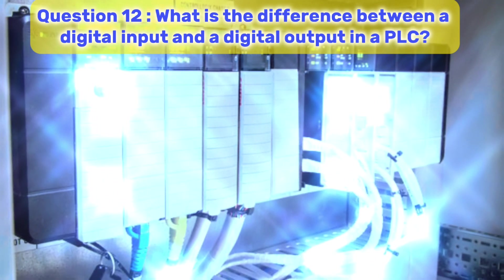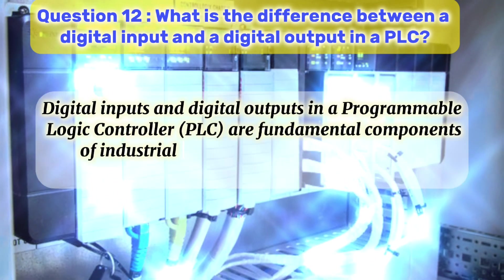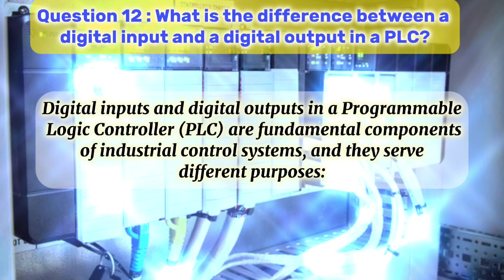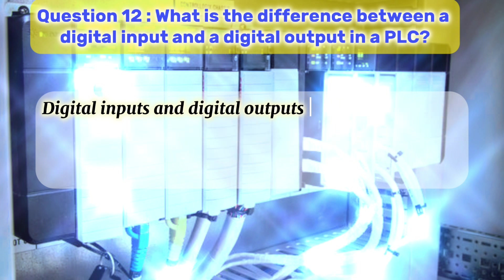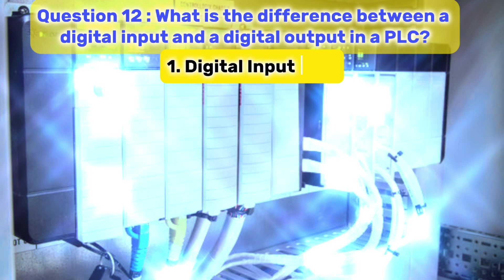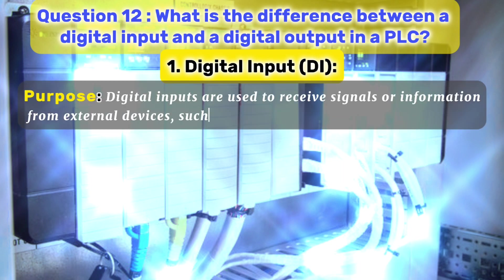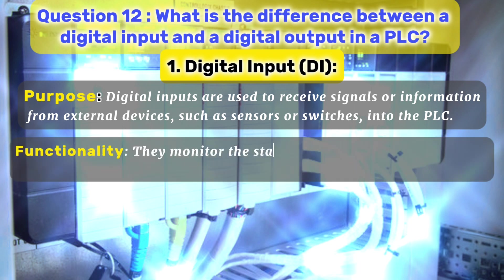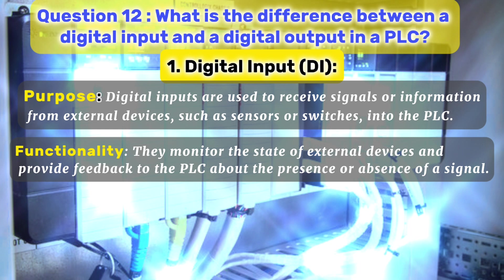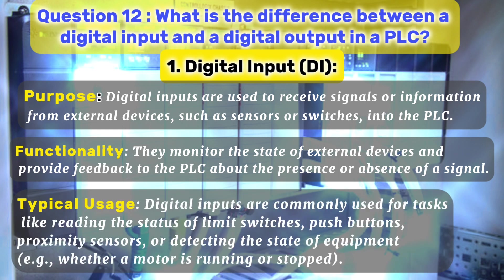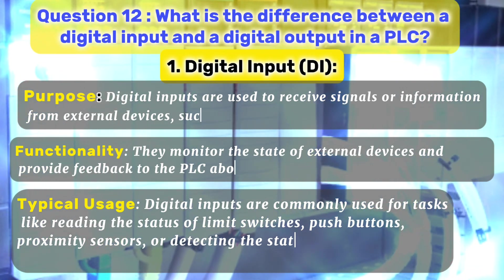Question 12. What is the difference between a digital input and a digital output in a PLC? Digital inputs and digital outputs in a programmable logic controller, PLC, are fundamental components of industrial control systems, and they serve different purposes. 1. Digital input (DI). Purpose: digital inputs are used to receive signals or information from external devices, such as sensors or switches, into the PLC. Functionality: they monitor the state of external devices and provide feedback to the PLC about the presence or absence of a signal. Typical usage: digital inputs are commonly used for tasks like reading the status of limit switches, push buttons, proximity sensors, or detecting the state of equipment, for example, whether a motor is running or stopped.